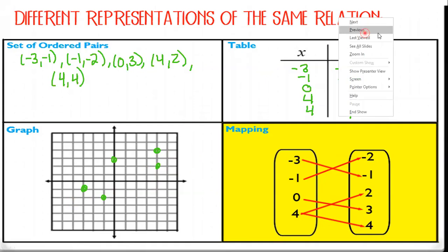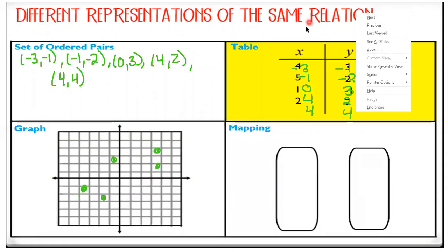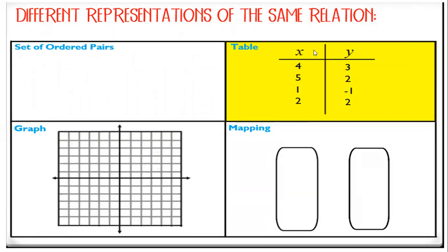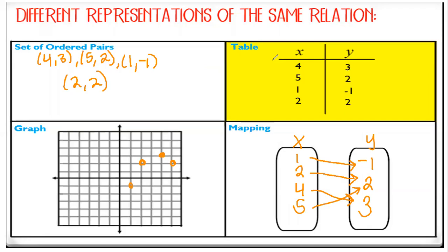The last one we're going to do is how to go from a table to the other three. I'm going to pause this one and let you guys try. This one is fairly easy because the table is basically set up like our ordered pairs. So four, three is our first ordered pair; five, two; one, negative one; and two, two. We easily graph those. And for the mapping, remember we go from least to greatest with no repeats — so the Y value two was repeated, so we only write it one time, but there are two arrows going to the two.